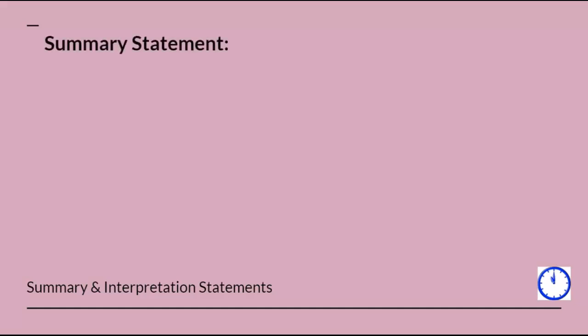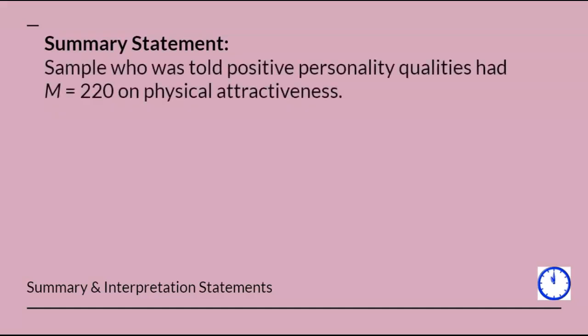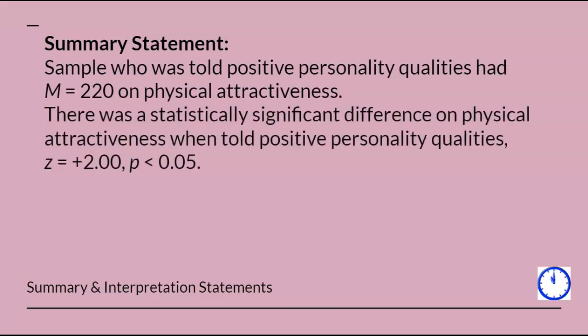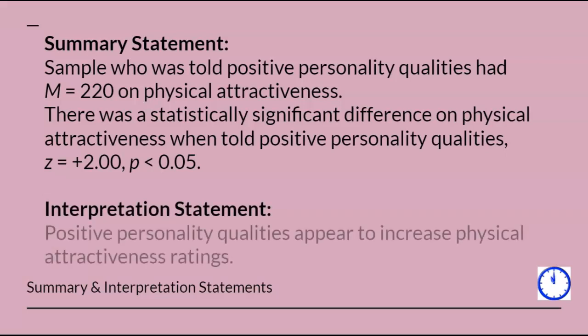The summary statement will consist of two sentences. The first sentence will report the mean of the sample, and the second sentence will report the Z-score, the significance level used, and the decision you made. Since the Z-test was statistically significant, the interpretation statement will be only one sentence.